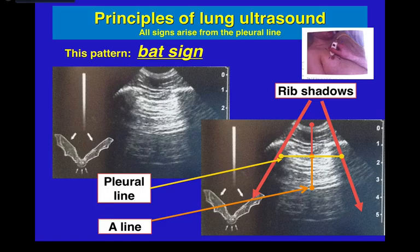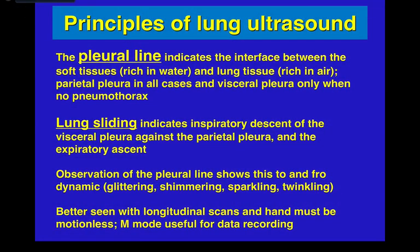A lines are horizontal lines that project below the pleural line. The pleural line is the first bright white line about 0.5 to 1 centimeter below the rib shadows. The pleural line indicates the interface between the soft tissues and the lung tissue — the parietal pleura in all cases, and the visceral pleura only when there is no pneumothorax.